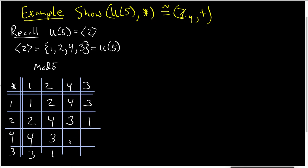4 times 4 is 16, which reduces to 1 mod 5. And 4 times 3 is 12, which is 2 mod 5. And so we get that particular entry. And finally, we have 3 times 3 is equal to 9, which is 4 mod 5. So that's my Cayley table for U5 under its multiplication.